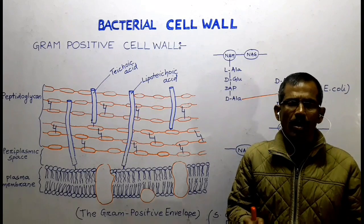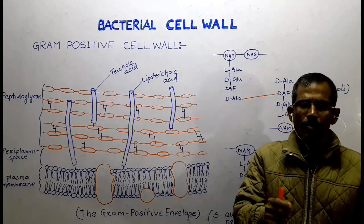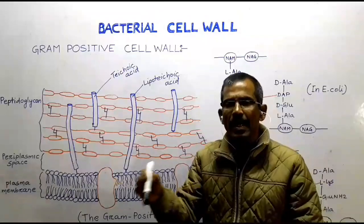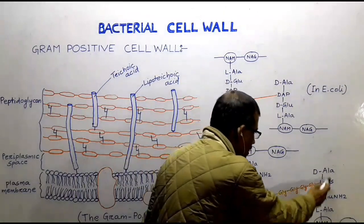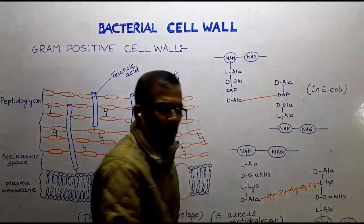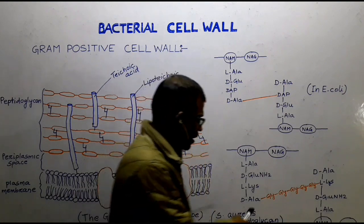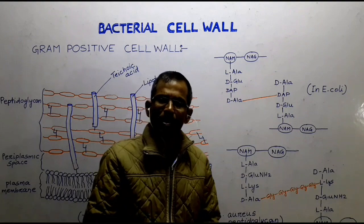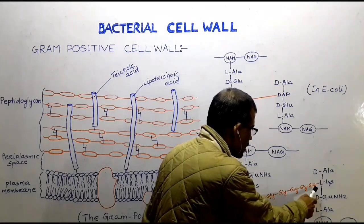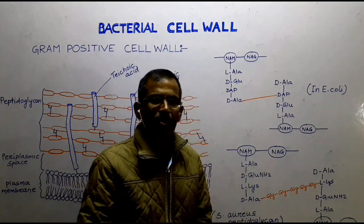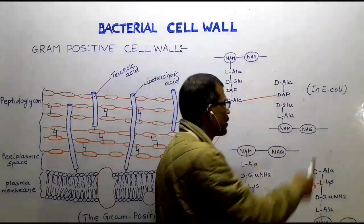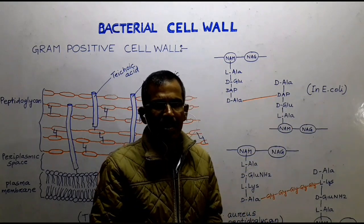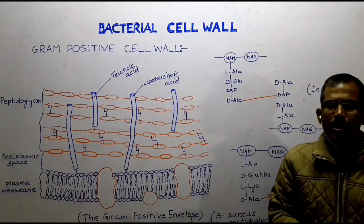The gram-positive bacterial cell wall is thick and composed primarily of peptidoglycan. In gram-positive bacteria, the tetrapeptide side chains are connected by peptide interbridges. For example, in Staphylococcus aureus, the peptide interbridge is composed of five glycine residues — a pentaglycine interbridge. In gram-negative bacteria such as E. coli, the side chains are directly connected without any interbridge. In addition, the gram-positive cell wall contains large amounts of teichoic acid.